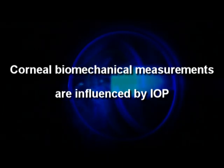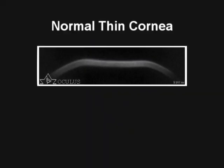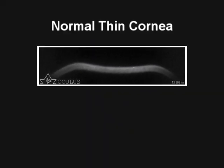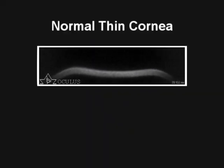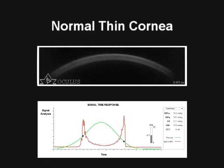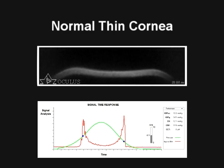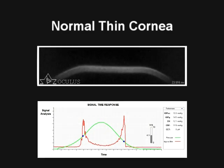We know corneal properties influence IOP measurements. From this experiment, we can also deduce that the opposite is true. Shown here is a normal, thin cornea measured on both the Corvis, shown at the top, and the ORA, shown at the bottom. Note that the deformation is flat in shape, indicating that this cornea is relatively stiff.